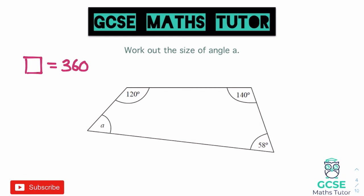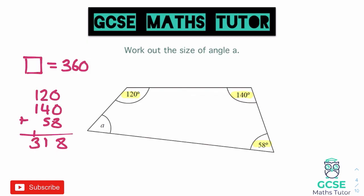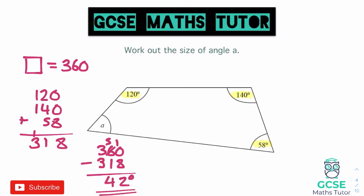At the moment we've got three angles: 120, 140, and 58. If we add those all together — 120, 140, and 58 — let's see what we get. 8, 11, and 3 — so 318. Our missing angle is the difference between 318 and 360. We do 360 take away 318. We'll borrow: 8 from 10 is 2, 1 from 5 is 4, and 3 from 3 is 0. So that comes out as 42 degrees, and that would be our final answer.